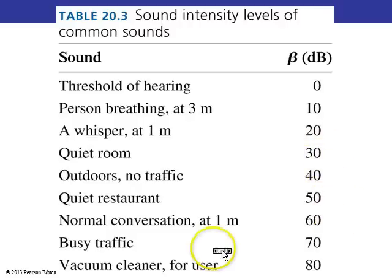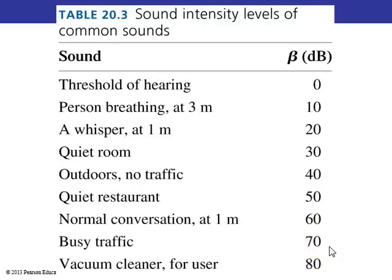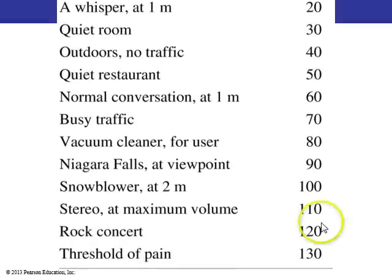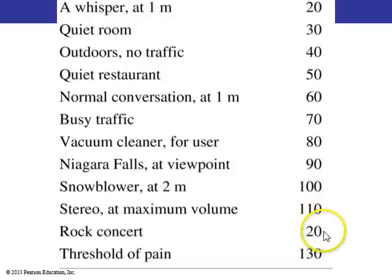Continuing up the decibel scale: busy traffic is 70 decibels, a vacuum cleaner is 10 times louder at 80 decibels, Niagara Falls when viewing it is 90 decibels, two meters from a snowblower is 100 decibels, a rock concert is about 120 decibels, and the threshold of pain beyond which you can actually damage your ears is 130 decibels.